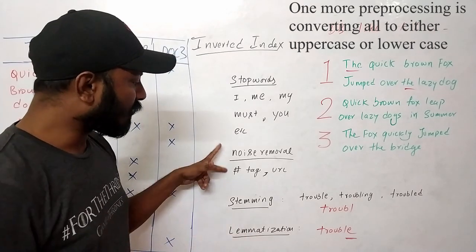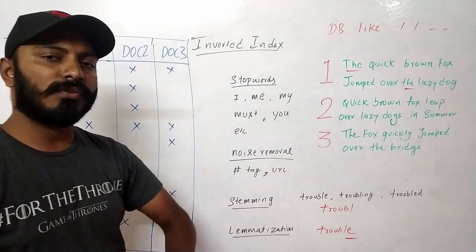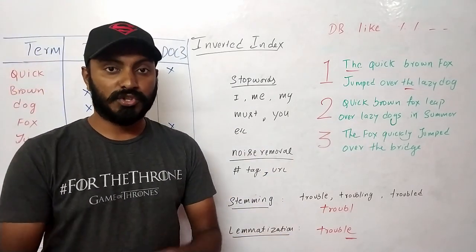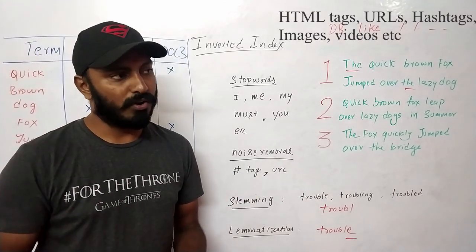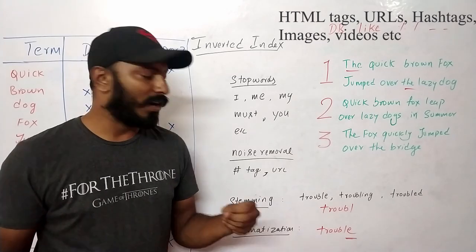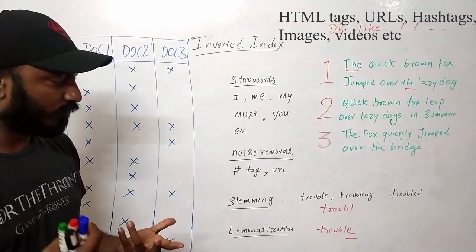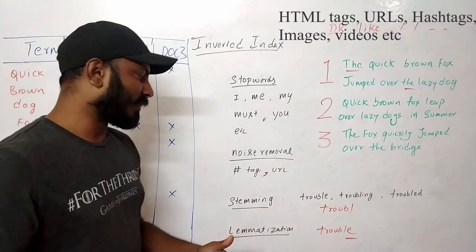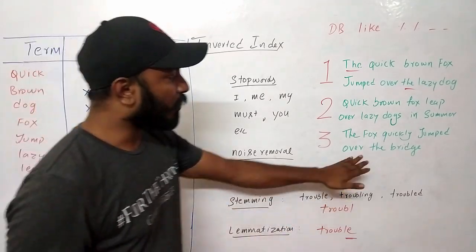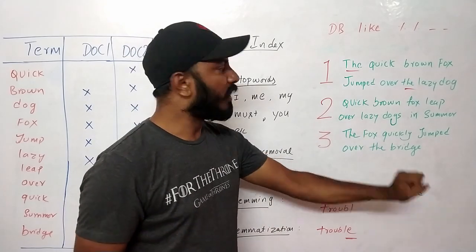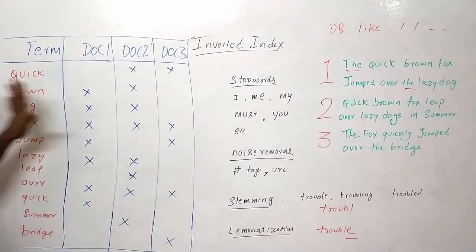Next is noise removal. In text, when Google crawls web pages, there will be tons of noise — hashtags, URLs, hyperlinks, random noise. We have to remove them as well, because if we consider all of them it may not be a proper implementation. Though it's up to your use cases — if you want to consider hashtags, you can. After running all of these steps, our documents are clean and we only have proper words.